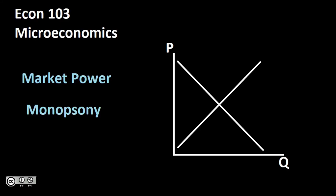In this video, we're going to carry on looking at market power and the market failure that's created in the presence of market power. In this case, though, we're going to be taking a look at the opposite of what we had with our monopolist. So remember with a monopoly, this was when we had a single seller.